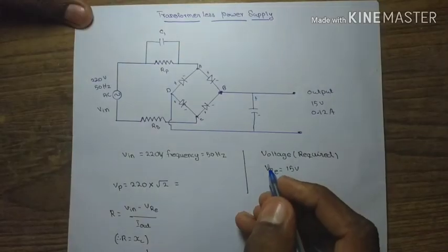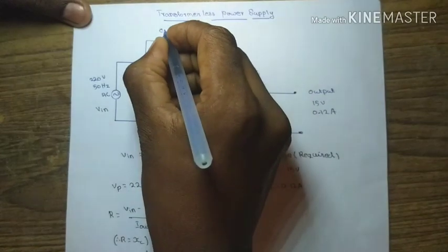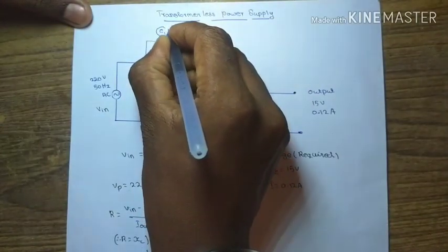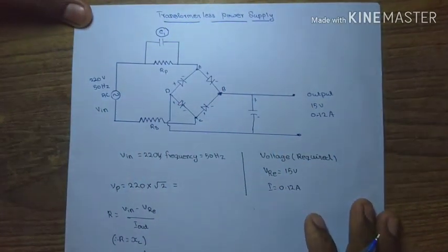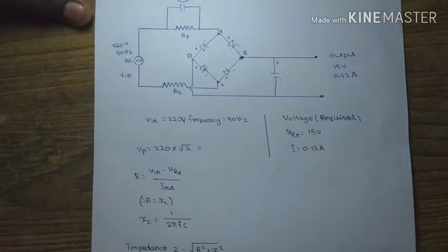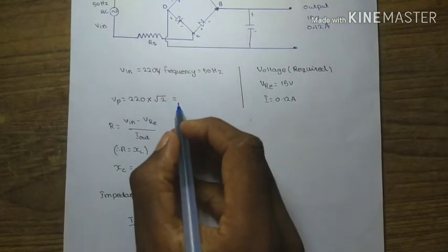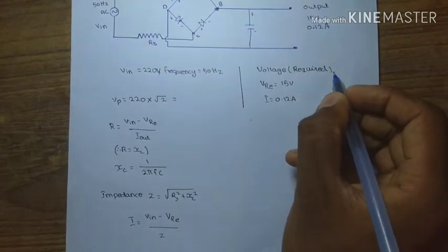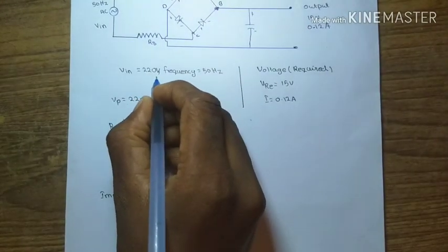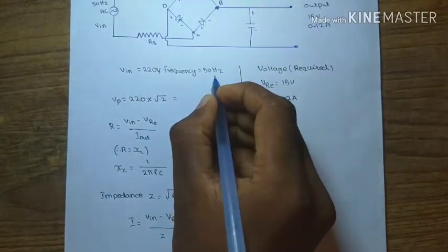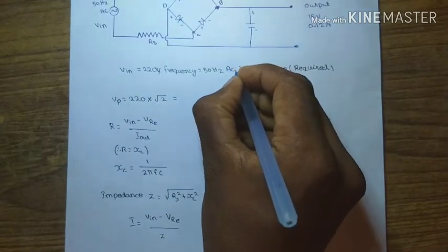For the transformerless power supply, how do we calculate the value of capacitor C1? We need input voltage and required output voltage. Input voltage is 220 volt, frequency 50 Hertz AC current.